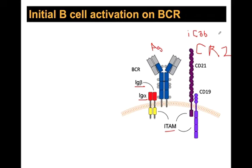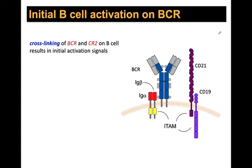Any defect in complement results in either inability to generate good antibody responses or failure to get antigen to a lymph node, which can ultimately result in autoimmunity. For B cell activation, what's required is cross-linking of the B cell receptor. There are many phosphatase proteins on the cell surface that prevent signaling, but cross-linking brings B cell receptors together so kinases can act without interference from phosphatases.